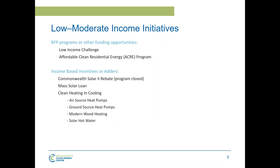We have had and currently have a number of incentives or adders to our incentive programs for low- to moderate-income residents. We've had the Commonwealth Solar Rebate Program, which had an income component. We currently have the Mass Solar Loan Program, which I'll focus on most. We also have clean heating and cooling programs — air source and ground source heat pumps, wood heating, and solar hot water — all of which have an income component or adder. We have tried to align the process we use for the Mass Solar Loan Program with our clean heating and cooling programs for consistency.